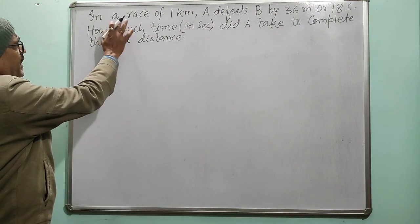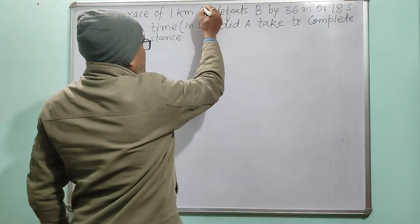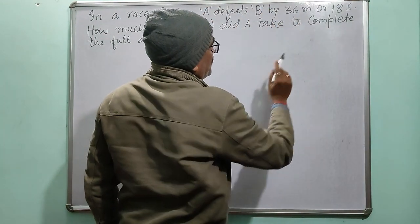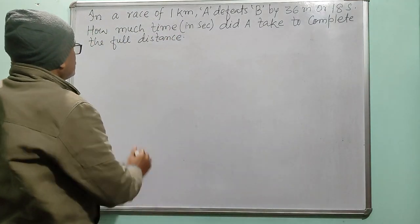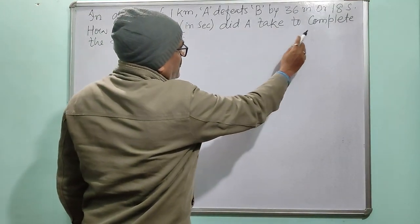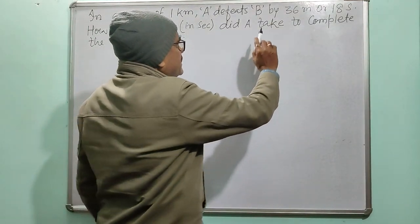In a race of 1 km, A defeats B by 36 meters or 18 seconds. How much time in seconds did A take to complete the full distance? Here we go.